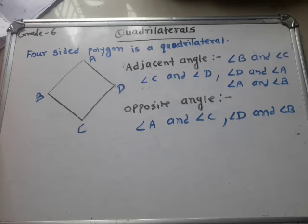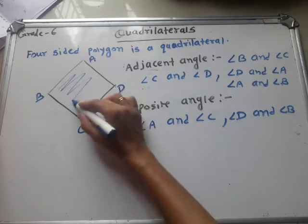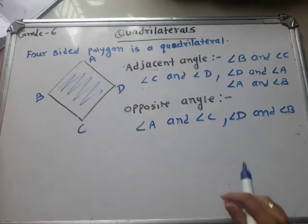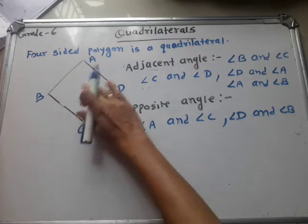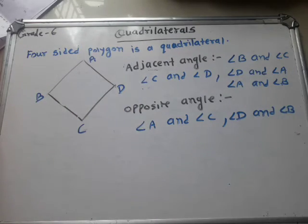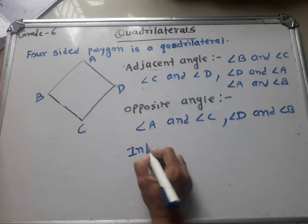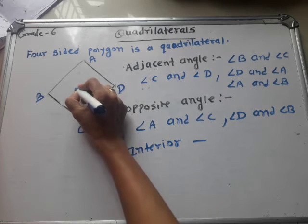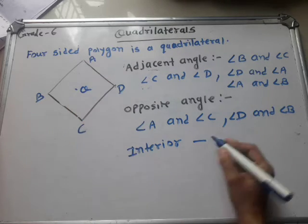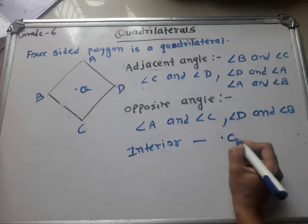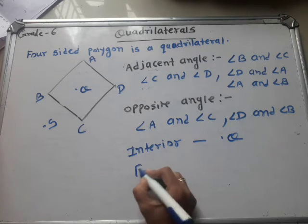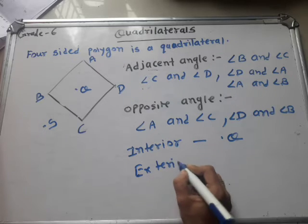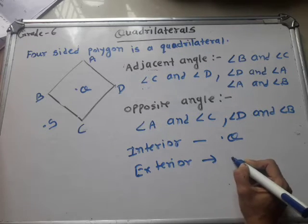A quadrilateral has an interior part and an exterior part. The inside part is called the interior part, and the outside is called the exterior part. For example, suppose we draw point Q inside — the interior point is point Q. And here point S is outside — that is the exterior point S.